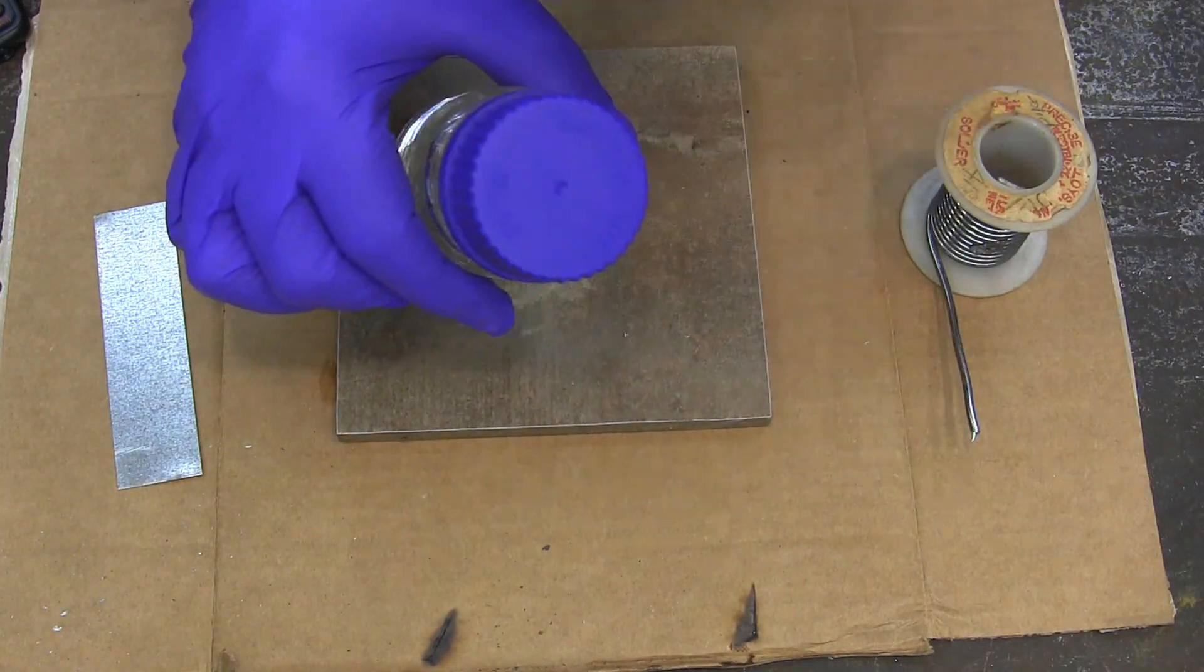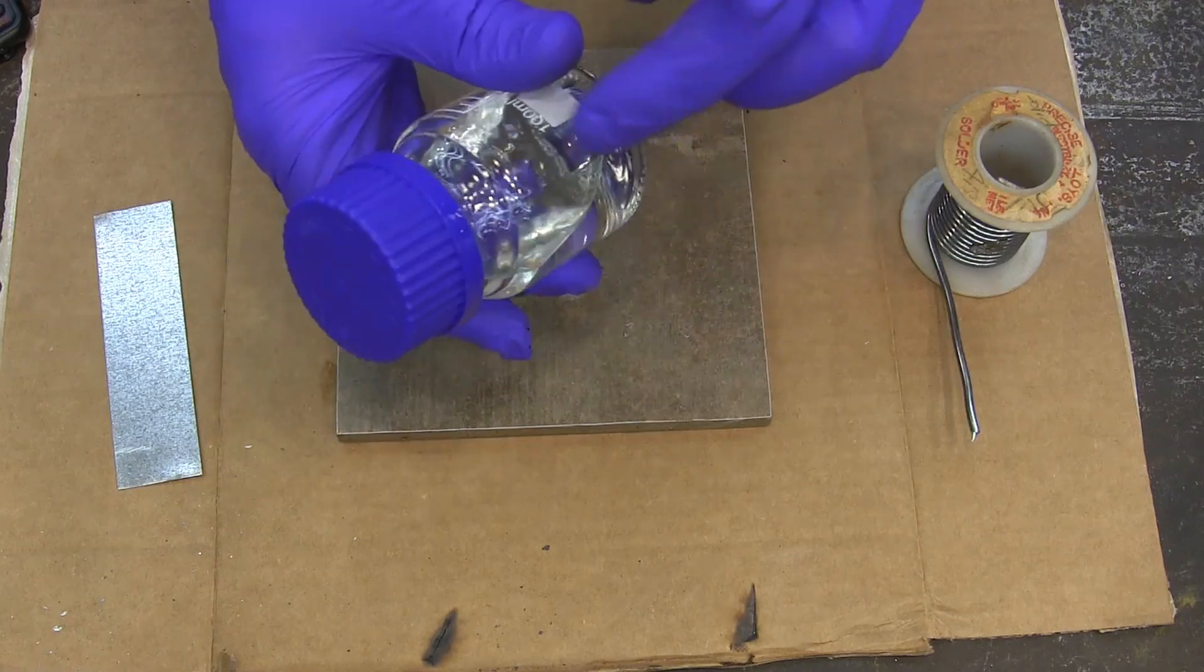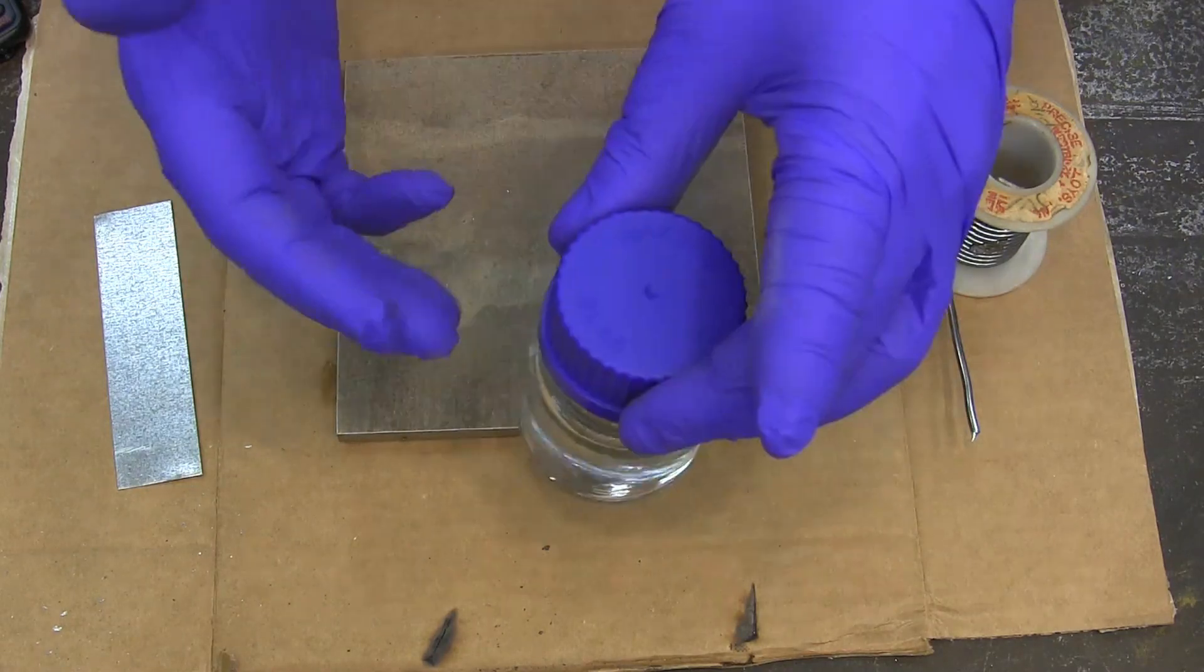You need something that's going to seal really well. It doesn't have any metal in it because this is an acid and it will eat through whatever metal you have it next to.